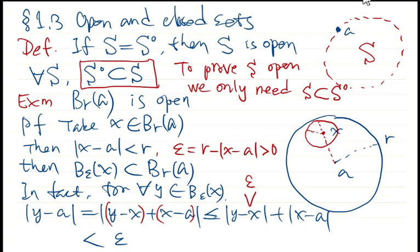By our definition of epsilon, this is exactly r. So our estimate implies that for any y in B_epsilon(x), the distance to a is less than r. Therefore, y belongs to B_r(a).